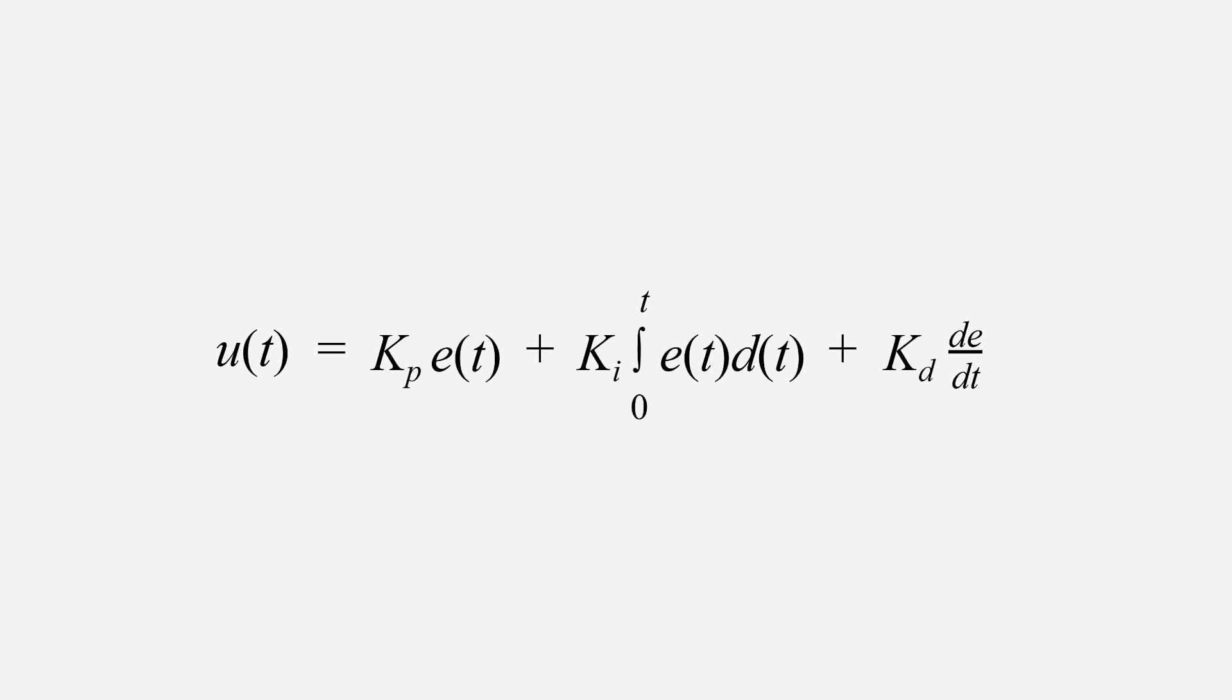Each term has a k, which is a constant gain. Note the subscripts. k is usually different for each term. k sub p, k sub i, and k sub d essentially determine how much influence the p, i, and d terms, respectively, each have on the output. Now, let's break this equation up into parts.